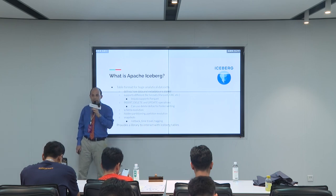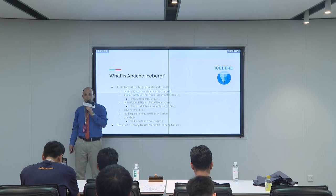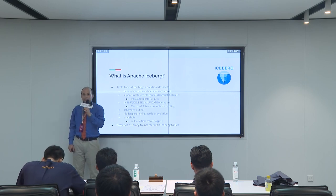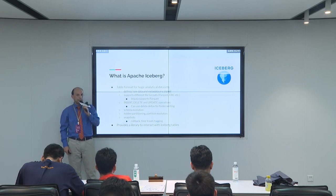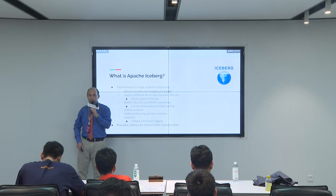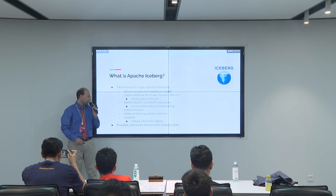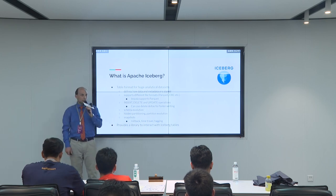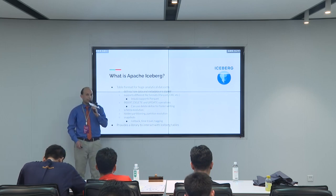A very good feature of Iceberg is that it allows you to go back to previous snapshots — previous states of the table. So if you make a mistake, you can go back and try again. You can also tag these snapshots, or query previous states of the table without actually rolling back. And very importantly, the Iceberg project provides a library with which we can interact with Iceberg tables, and that's something we use in Impala.